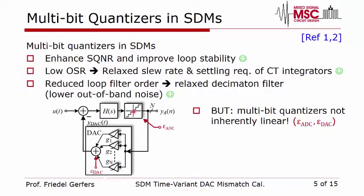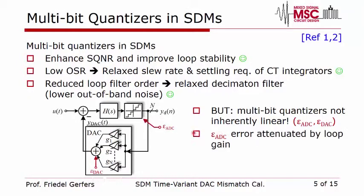However, since we have a multi-bit quantizer, errors are introduced due to nonlinearity. I have marked these as an ADC nonlinear error entering the loop and a DAC error added at the feedback loop. Looking at the ADC error, we see there is a filter in front of it, so ADC errors are highly attenuated and are usually not a significant problem for multi-bit quantization.